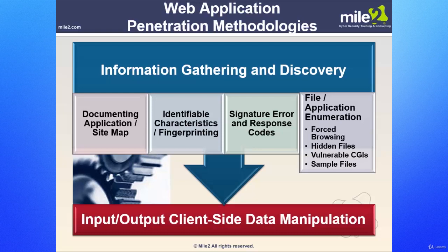Also look at vulnerable CGIs — your common gateway interfaces. These allow us to possibly expose some information. A lot of times when it comes to CGIs, we're talking about Perl generally. Any kind of sample files out there would also assist in identifying what server and what apps are running. Input/output and client-side data manipulation can also be done. Let's take a peek at those samples and how we can change some things around.